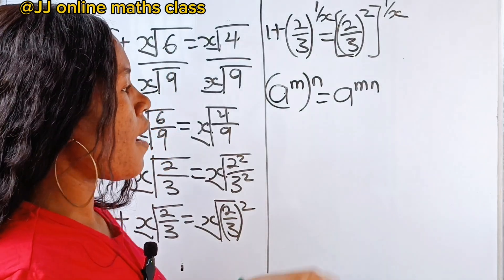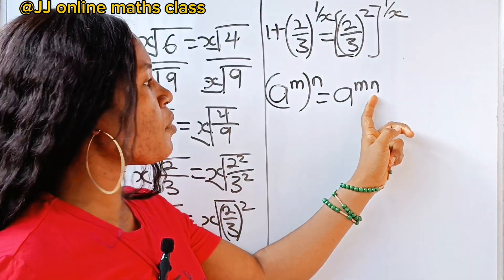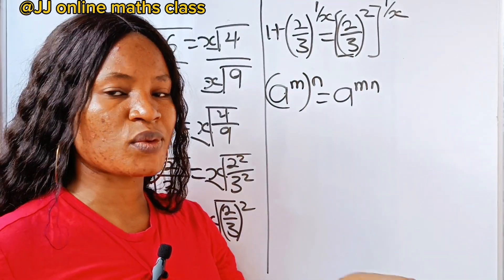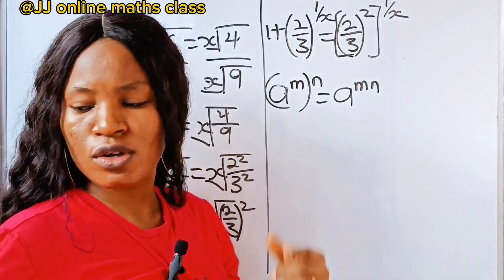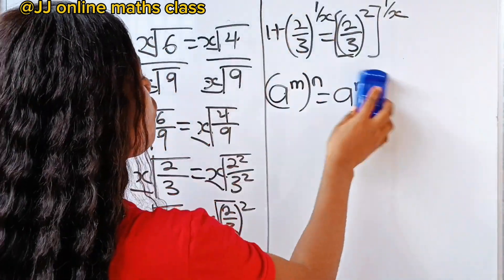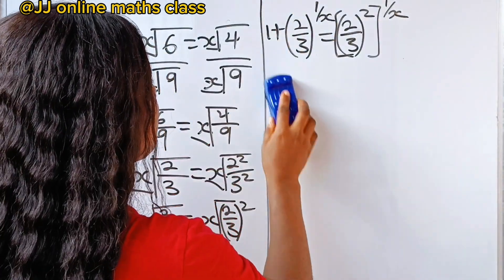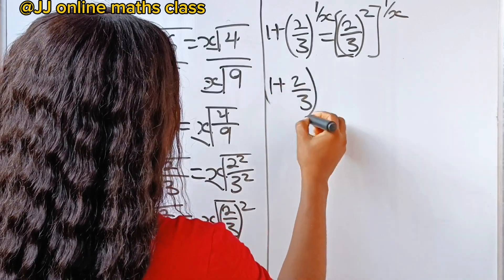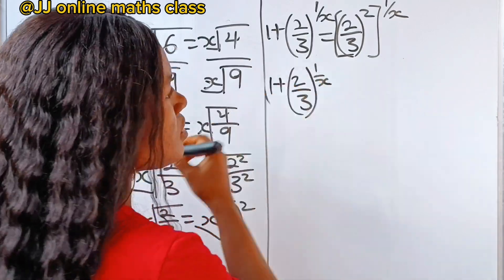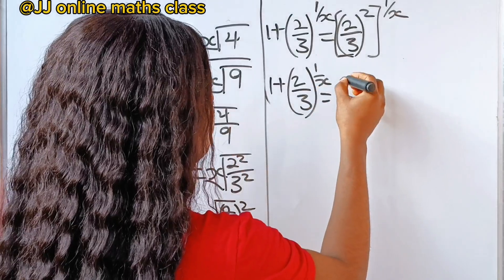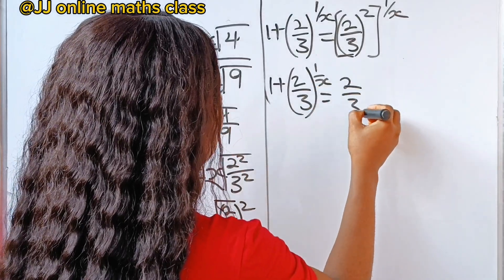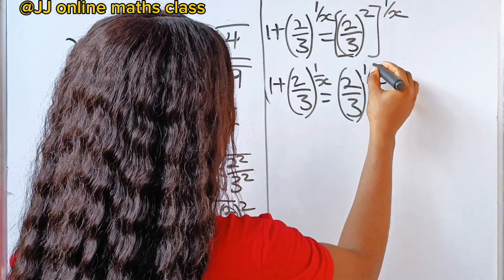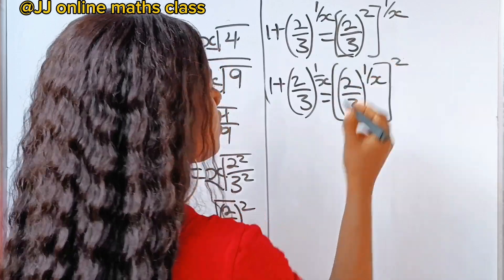That is m times n. And if that is the case, that means we can transfer n inside and bring m outside without changing the value. So if we do that, we will have 1 plus 2 over 3 raised to the power of 1 over x, is equal to 2 over 3 raised to the power of 2 over x.